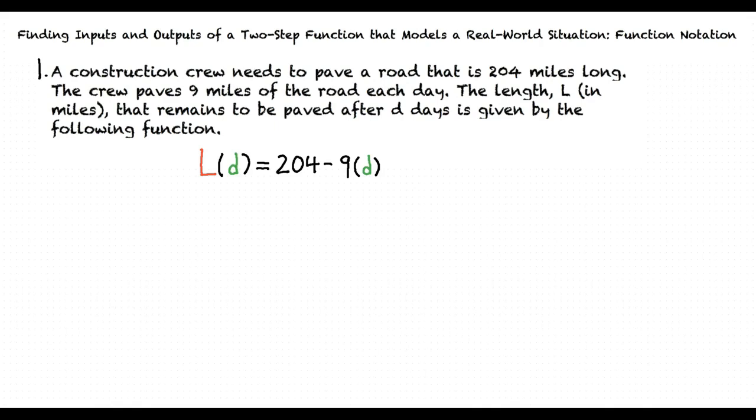A construction crew needs to pave a road that is 204 miles long. The crew paves 9 miles of the road each day. The length L in miles that remains to be paved after D days is given by the following function. L of D is equal to 204 minus 9D.